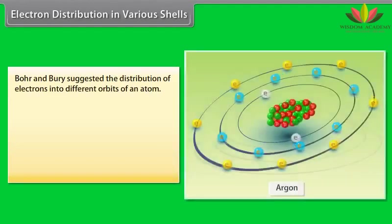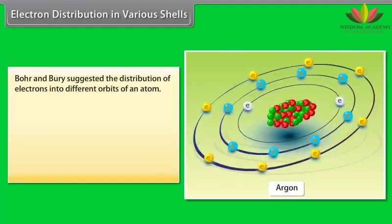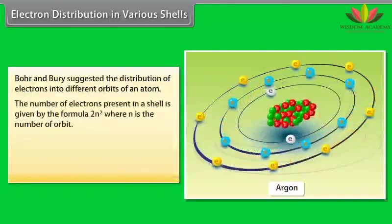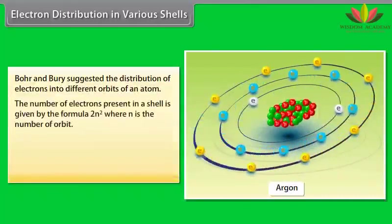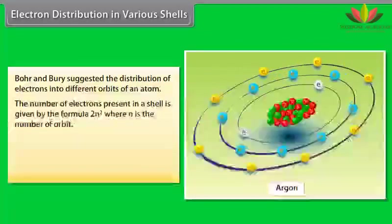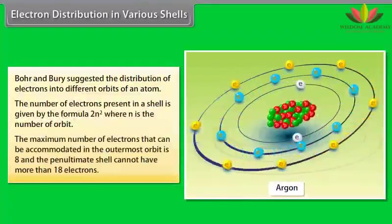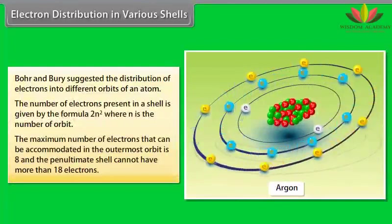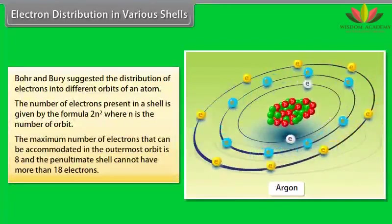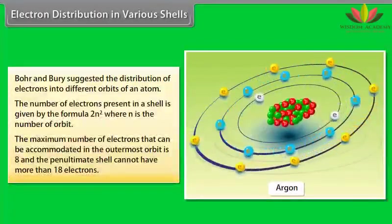Electron distribution in various shells. Bohr and Burry suggested the distribution of electrons into different orbits of an atom. The number of electrons present in a shell is given by the formula 2N2, where N is the number of orbit. The maximum number of electrons that can be accommodated in the outermost orbit is 8, and the penultimate shell cannot have more than 18 electrons.